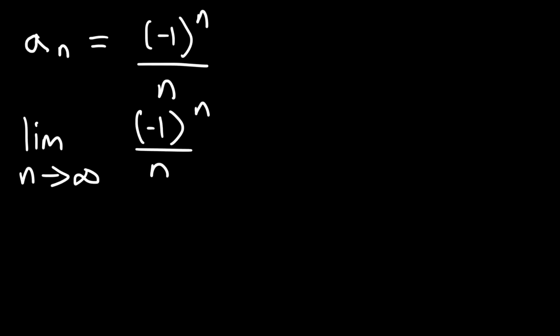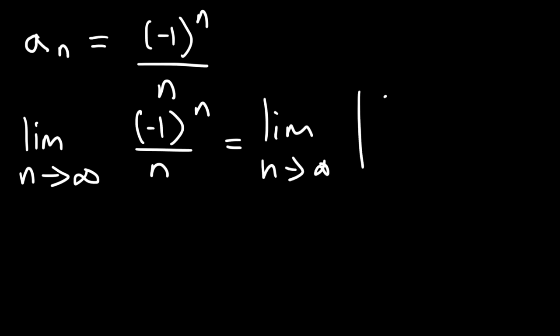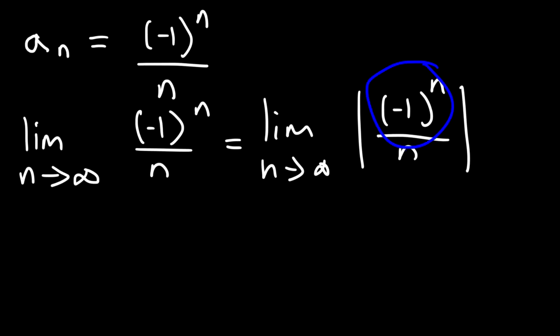Let's take the absolute value of this expression. We're going to evaluate the limit as n approaches infinity of the absolute value of (-1)^n / n. The (-1)^n portion only makes the sequence positive or negative — it doesn't change the magnitude, just the sign.